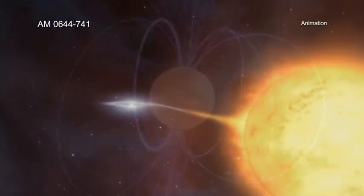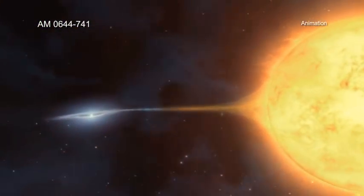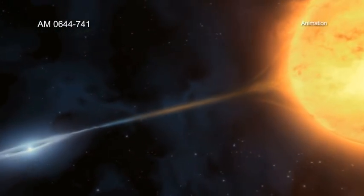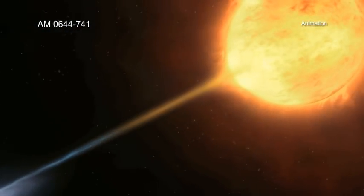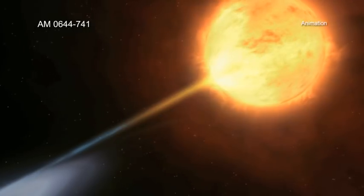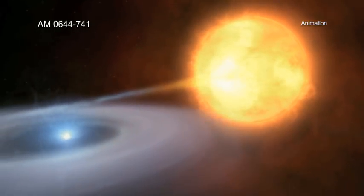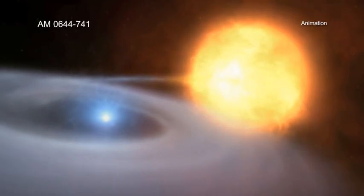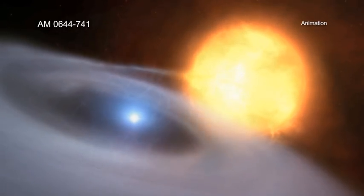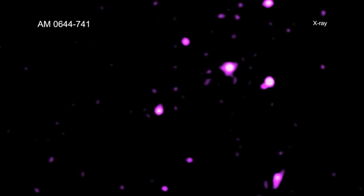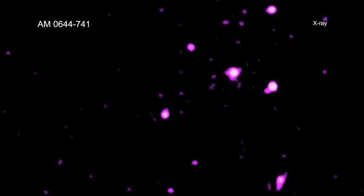Some of these black holes and neutron stars have close companion stars and siphon gas from their stellar partner. This gas falls toward the black hole or neutron star, forming a spinning disk like water circling a drain, and becomes heated by friction. This superheated gas produces large amounts of X-rays that Chandra can detect.